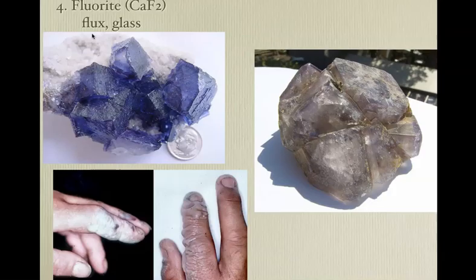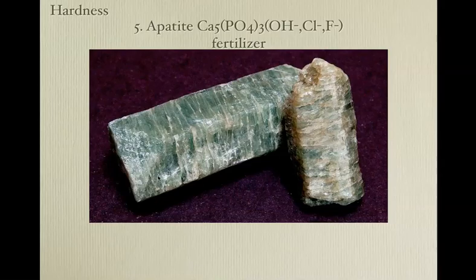Fluorite is used in making glass and flux, and also in making hydrofluoric acid. Don't stick your fingers in hydrofluoric acid — it kind of messes them up. Apatite is used in fertilizer — this is important because we are using up our good supplies of apatite; this could be a problem in the future.